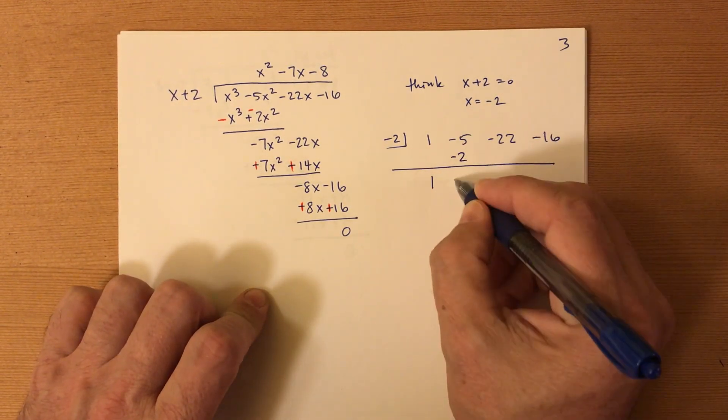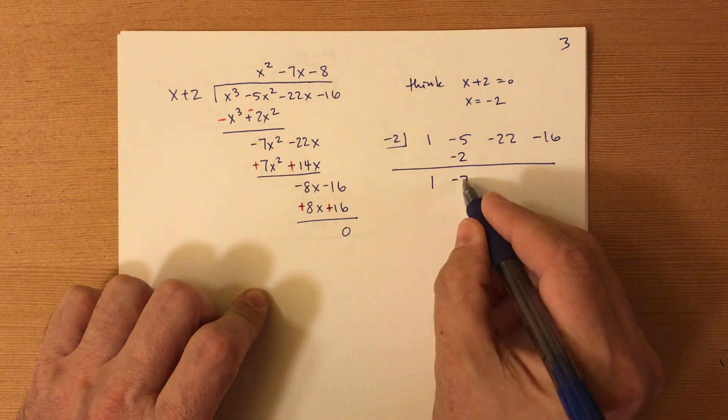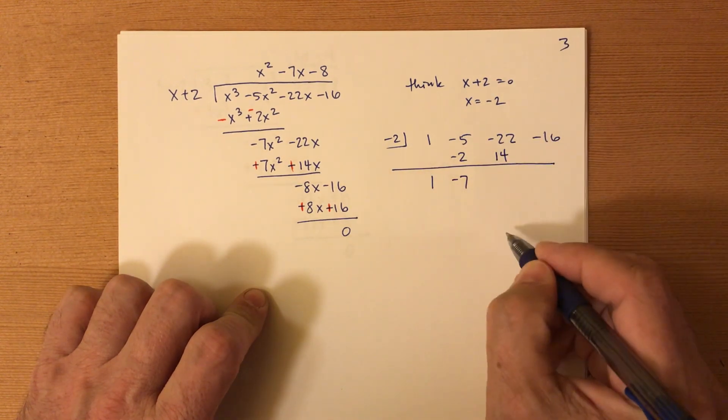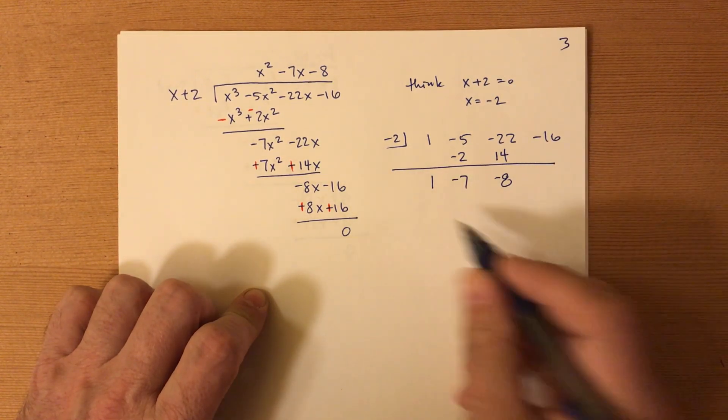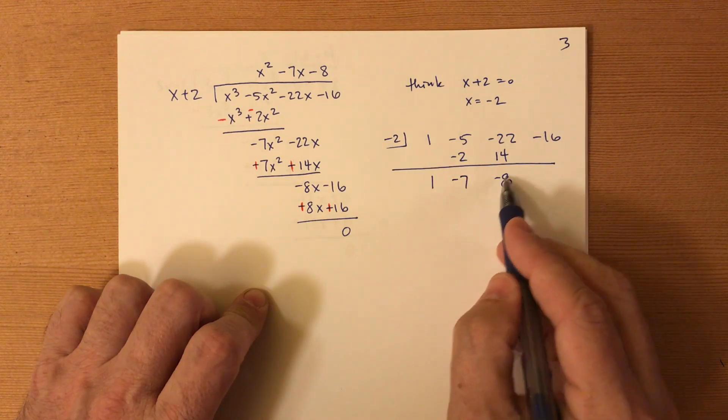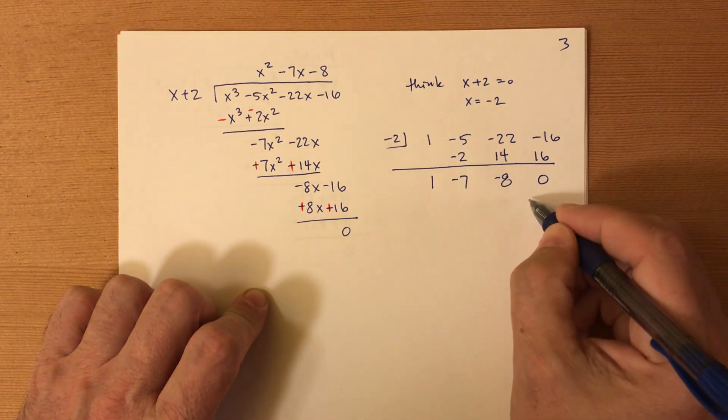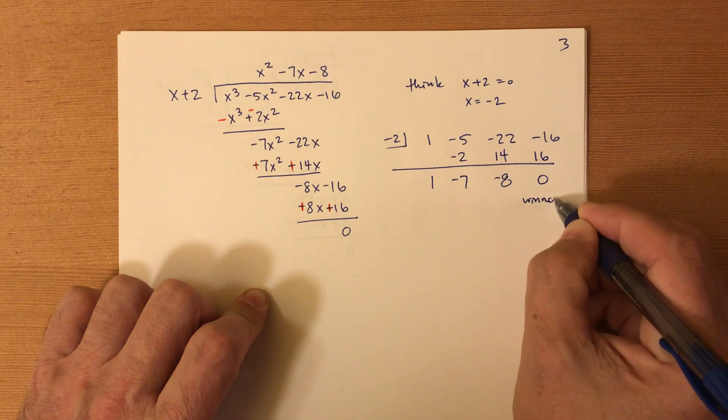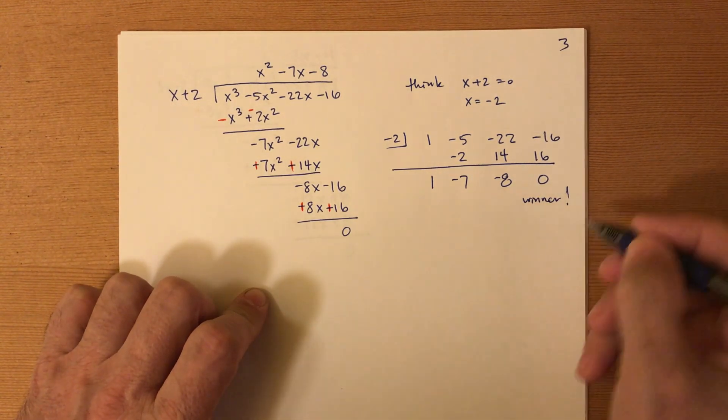Negative two times one, negative two. That's negative seven. Positive 14. Negative eight. Negative two times negative eight. Positive 16. This is a winner. This is a huge deal coming up in this chapter. This is a winner.